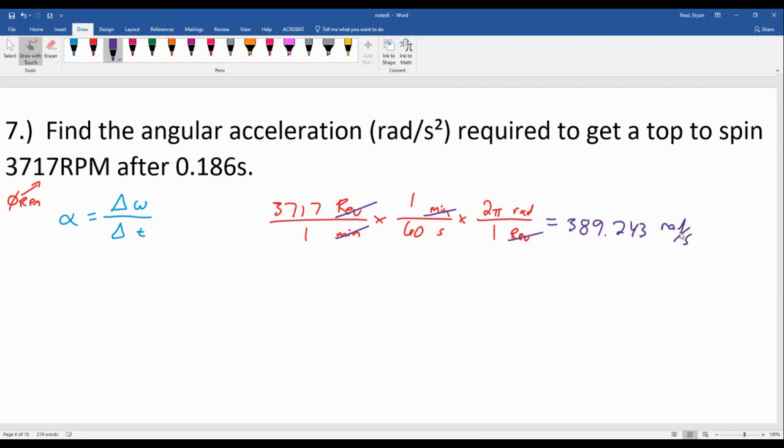And that's radians per second. So that's our angular velocity, which again is omega. It kind of looks like a fancy W. And we go from zero to this number. So technically this ends up being change in omega, but I don't really have space.